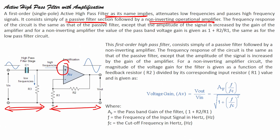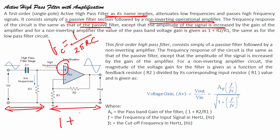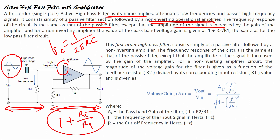The frequency response of the circuit is the same as the passive filter, with the formula FC = 1/(2πRC), except that the amplitude of the signal is increased by the gain of the amplifier. For a non-inverting amplifier, the DC gain is 1 + R2/R1. The output is an amplified version of the input. The frequency response is the same as the passive filter; however, the amplitude of the signal is increased by the gain of the amplifier.